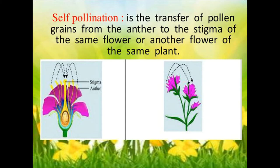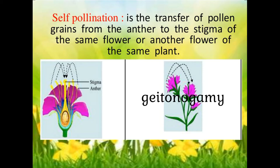Self-pollination may include autogamy, where pollen moves to the female parts of the same flower, or geitonogamy, when pollen is transferred to another flower on the same plant. Self-pollination leads to self-fertilization. It is an advantage where members of the species are uncommon and separated by large distances, as it is not dependent on an external factor such as wind. It is also useful in harsh conditions.